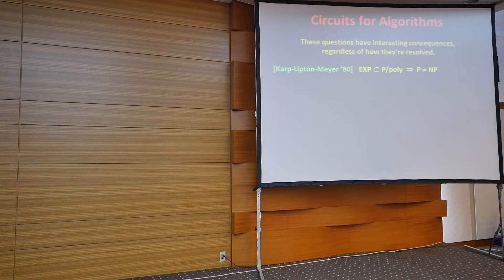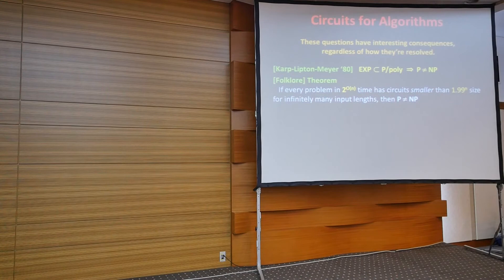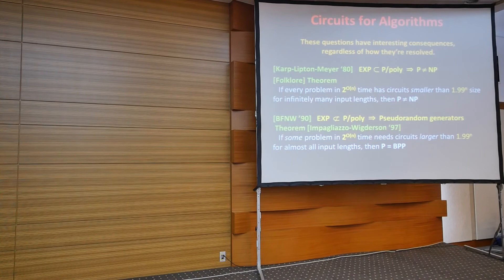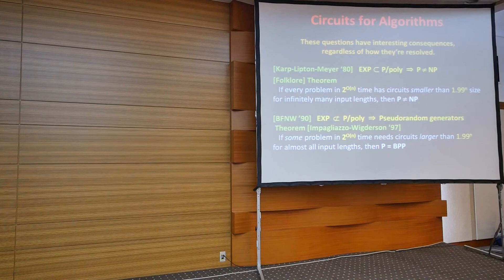These questions have very interesting consequences regardless of how they're resolved. If exponential time happened to be contained in P/poly, we would actually be able to prove that P is different from EXP. On the other hand, if EXP is not in P/poly — which is what we expect — then if some problem in 2^(O(N)) time needs circuit families larger than 1.9^N in size, then P equals BPP: any randomized polynomial time algorithm can be efficiently converted into a deterministic polynomial time algorithm. This is a famous theorem due to Impagliazzo and Wigderson along these lines.